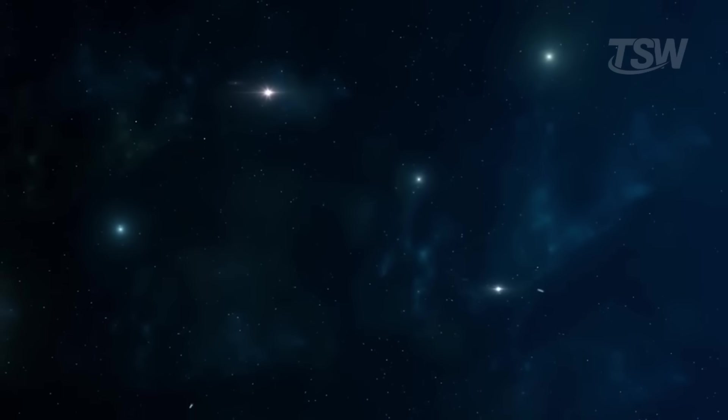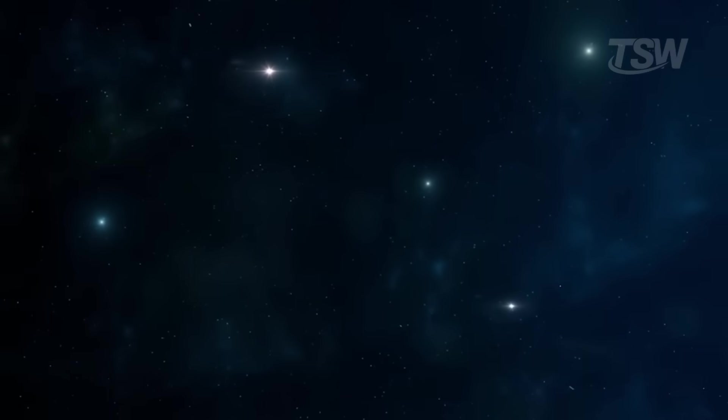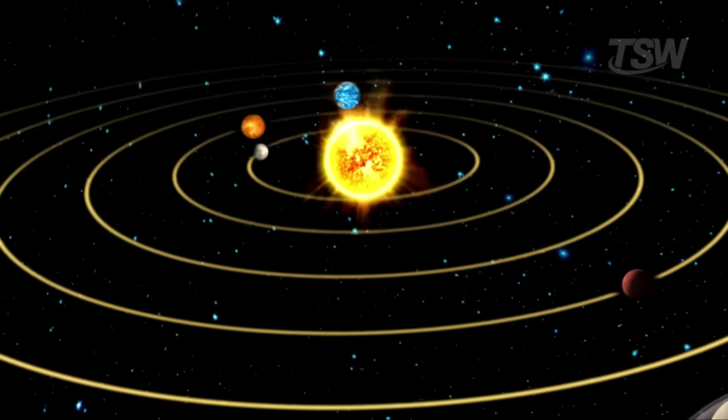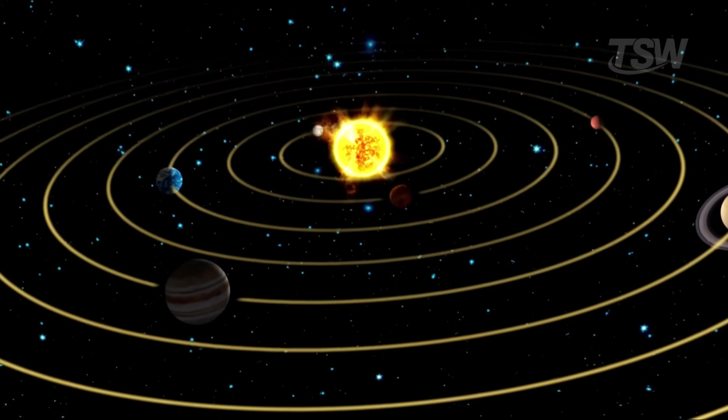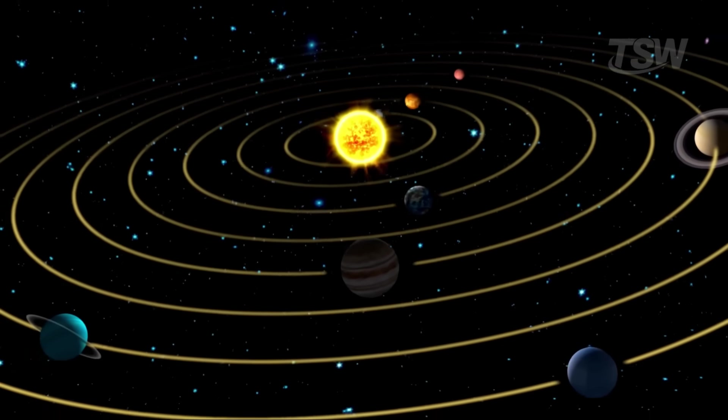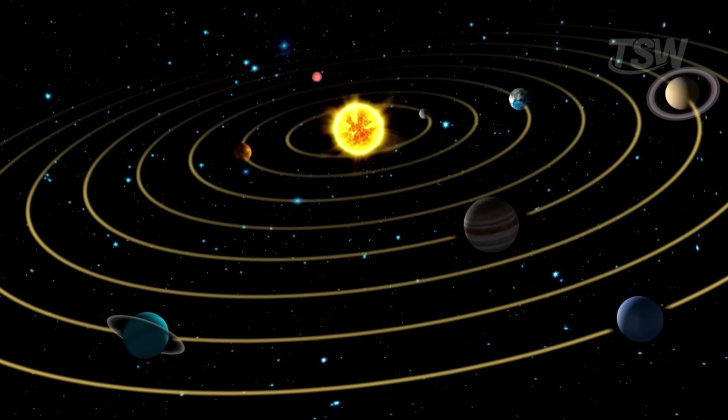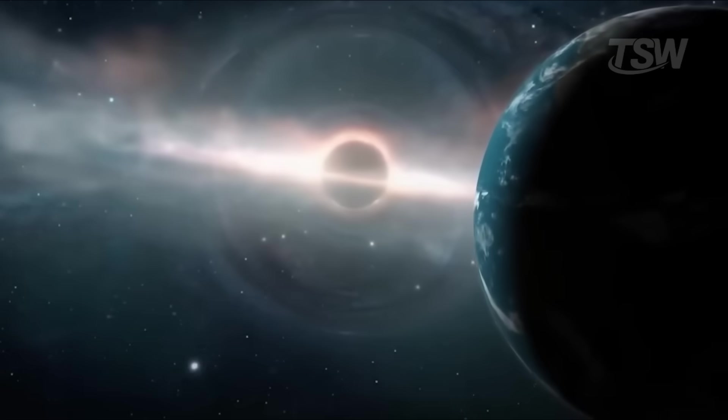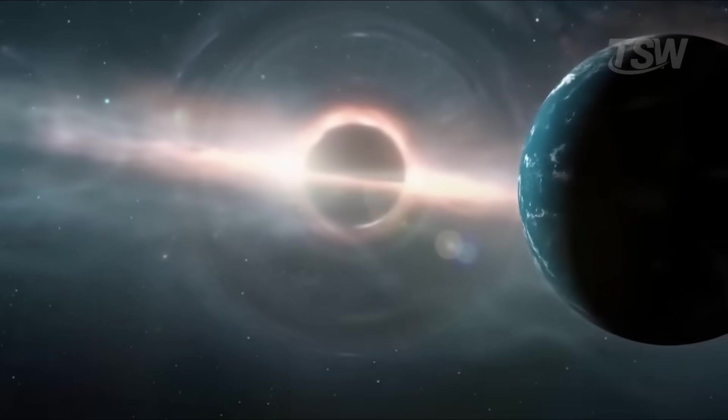Gliese 710 is a beautiful, unsettling reminder of that slow choreography. We are passengers. And the stage we live on travels too. In the end, the storyline is this: the solar system is a well-organized place, stable enough for life to flourish, but not isolated from the rest of the cosmos. From time to time, a passing star brushes the outskirts and jiggles an old cabinet, scattering a few items on the floor.